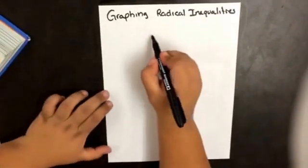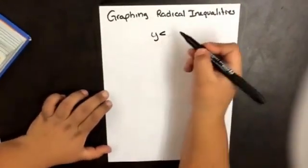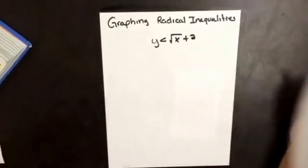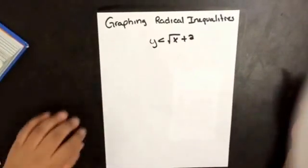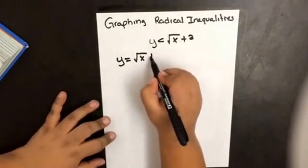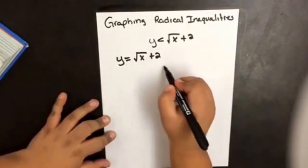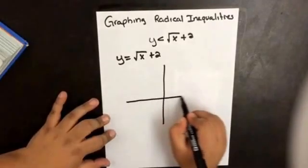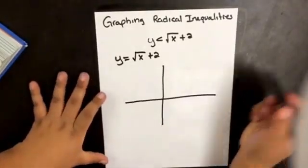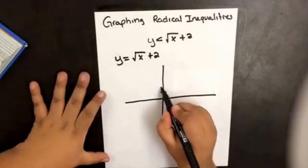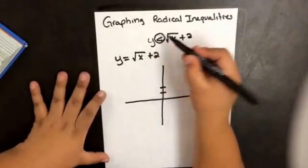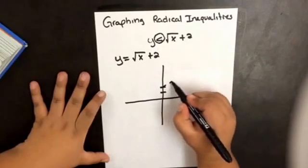Let's say that we have y is less than the square root of x plus 2. We can use the related equation y equals the square root of x plus 2. So we're moving the graph of the square root of x 2 units up. Since we have a less than, it's going to be a dashed curve.